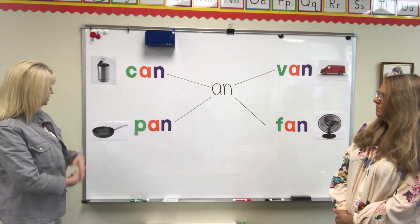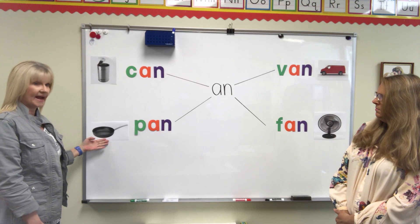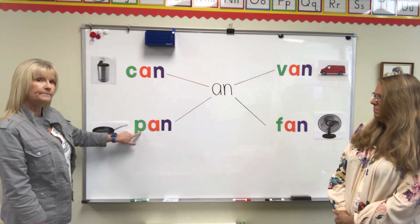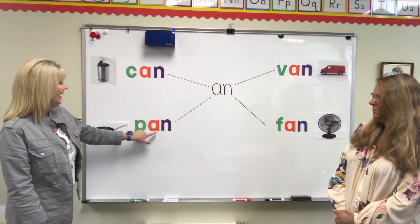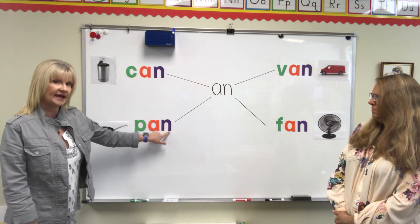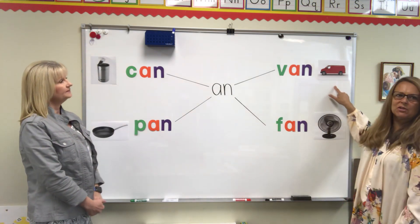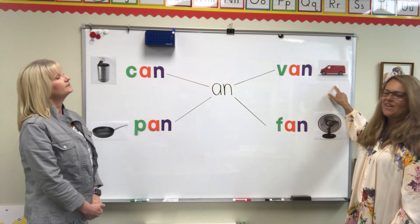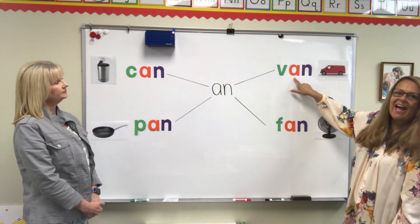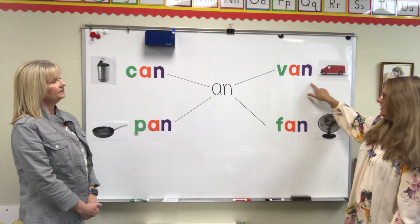Our next word is a picture of a pan. It has three letters as well: P-A-N. Pan. And the next picture is a picture of a van: V-A-N. Van.